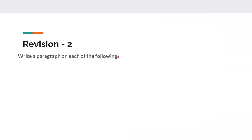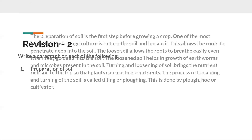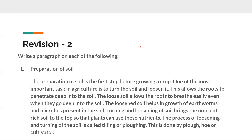Write a paragraph on each of the following four questions. The first one is preparation of soil. The answer is written here; I'm just going through this. The preparation of soil is the first step before growing a crop. We have learned in the beginning of the lesson that one of the most important tasks in agriculture is to turn the soil and loosen it.